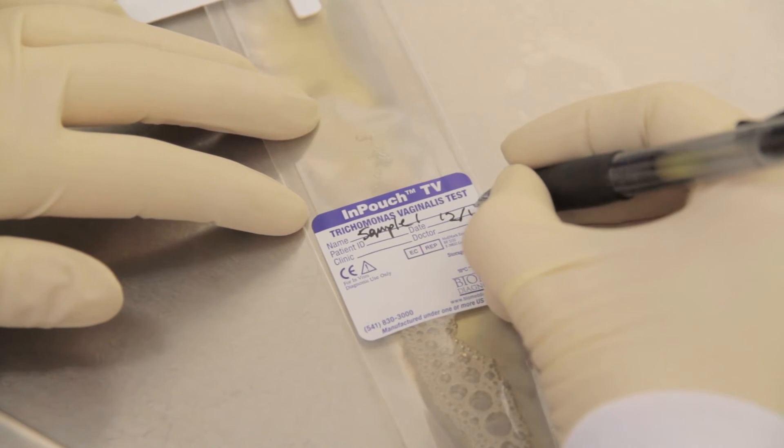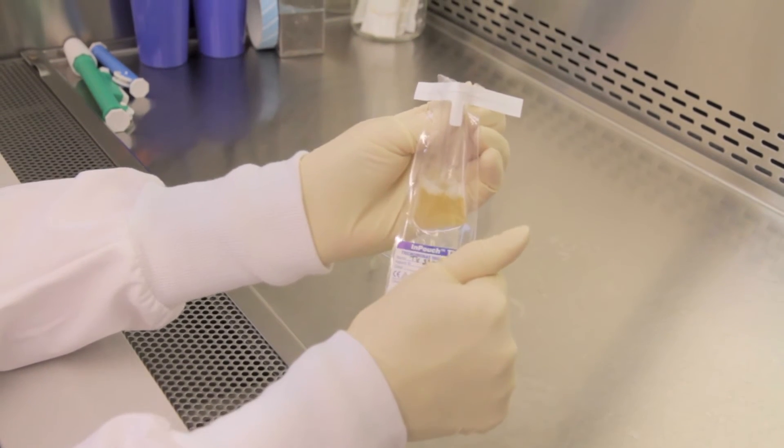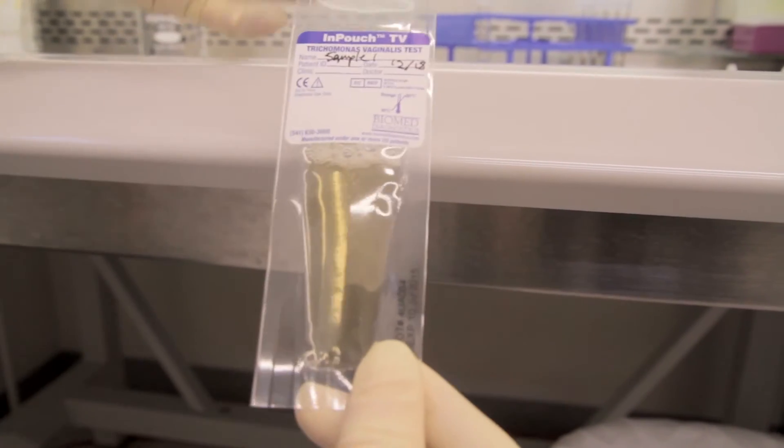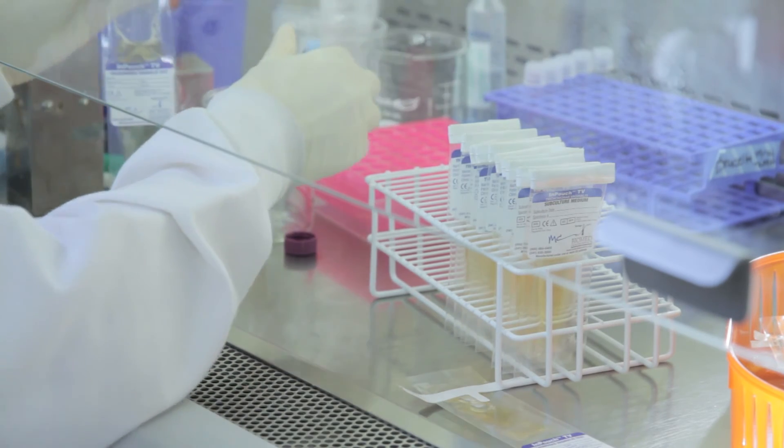At first look, you see the InPouch TV device is divided into two chambers. The upper chamber is designed for inoculation, the lower chamber for incubation. This self-contained design makes it ideal for off-site sampling or for point-of-care testing.